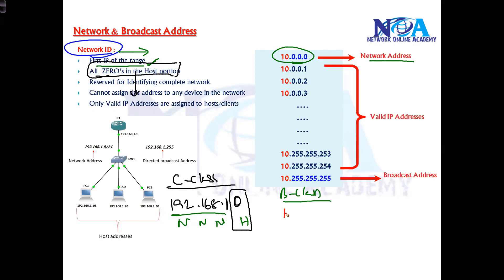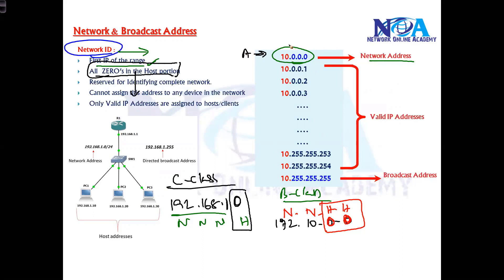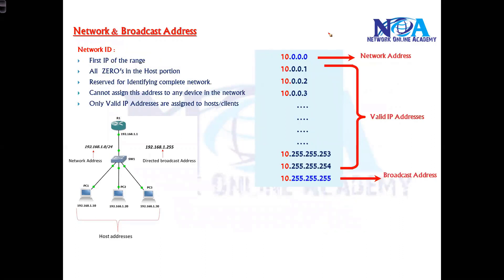Similarly, in B class there are two network portions and two host portions. So an address like 172.10.0.0 is a network ID because both host portions are zero — the first IP always starts with all zeros in the host portion. In A class there is one network portion and three host portions, so all three host portions must be zero for it to be the network address. This address is reserved for identifying the complete network.